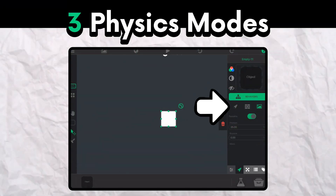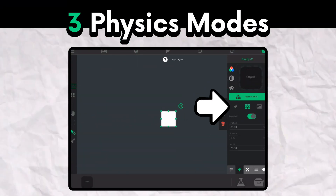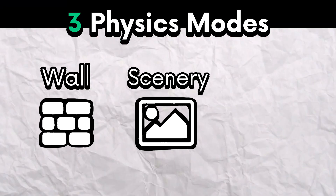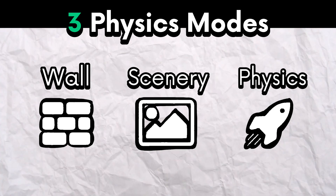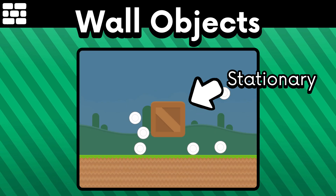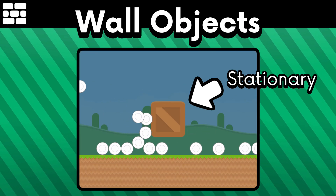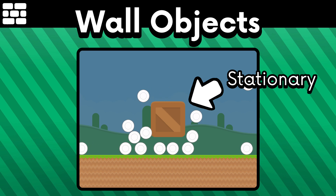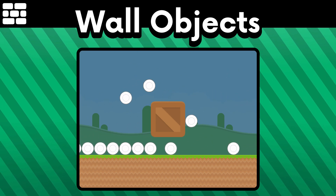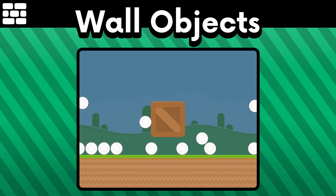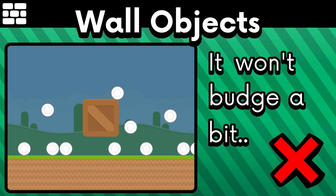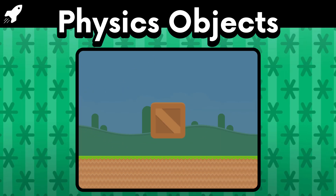There are three different physics modes: wall, scenery, and physics. Wall objects are stationary and won't react to physical forces, like when something hits it or if another object is pushing against it. It won't budge a bit, unless you tell it to.